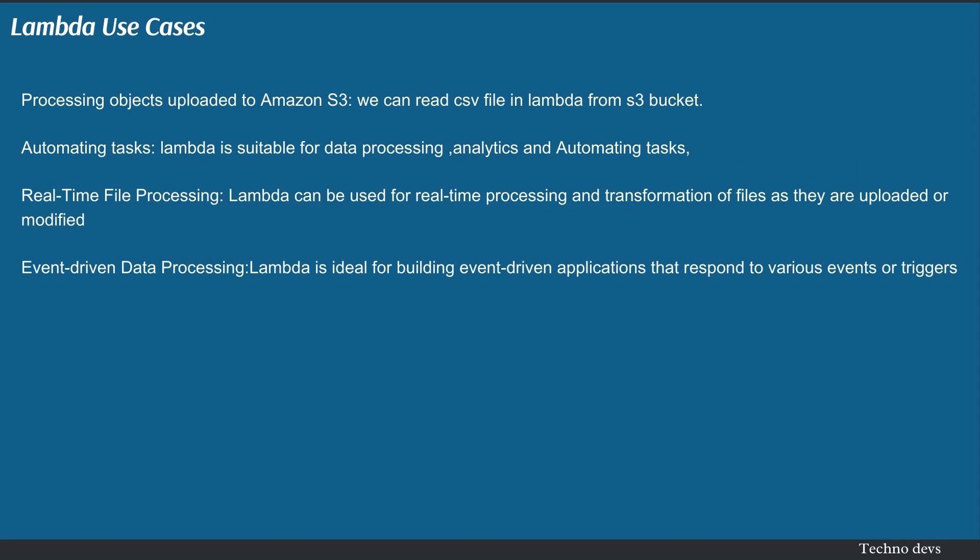Lambda use cases: Processing objects uploaded to Amazon S3 — we can read a CSV file in Lambda from an S3 bucket. Lambda is also suitable for data processing, analytics, and automating tasks. Real-time file processing — Lambda can be used for real-time processing and transformation of files as they are uploaded or modified. Event-driven data processing — Lambda is ideal for building event-driven applications that respond to various events or triggers.